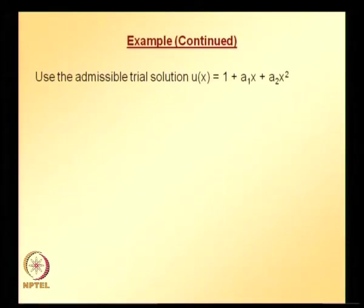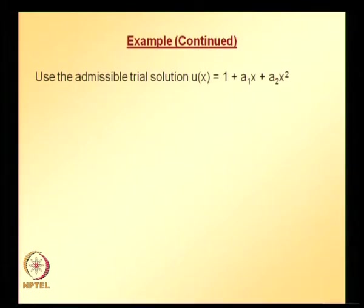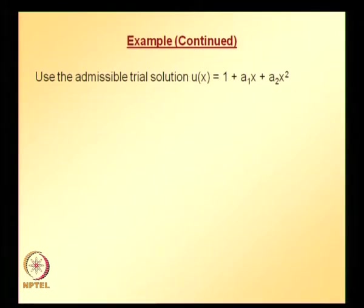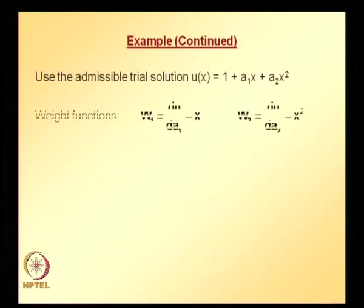Now let us go through the procedure. First, we need to select a trial solution and make it admissible by satisfying the essential boundary condition, finding one of the unknown coefficients if possible. The admissible trial solution for this problem is u = 1 + a₁x + a₂x². An admissible trial solution is one that satisfies the essential boundary conditions — you can verify by substituting x = 0.